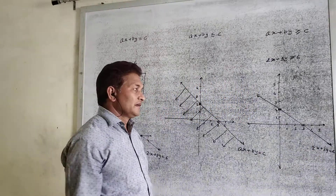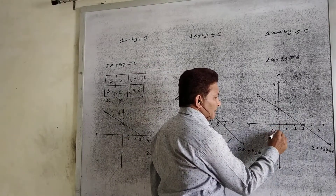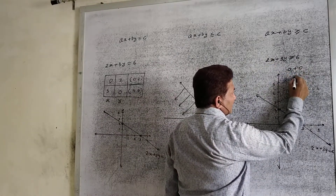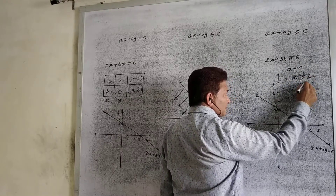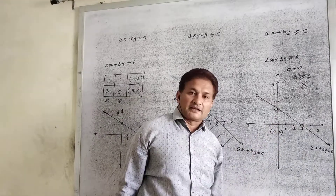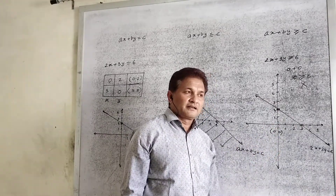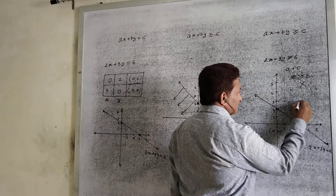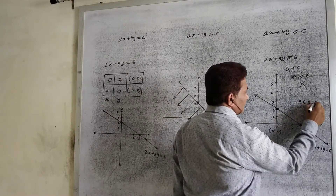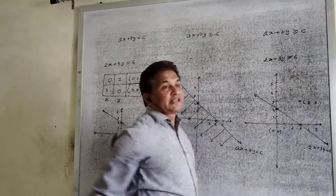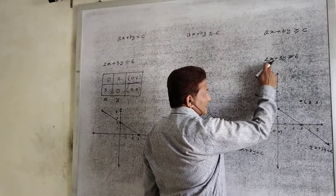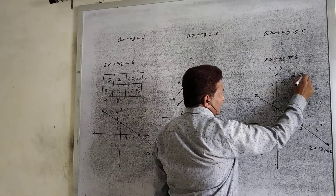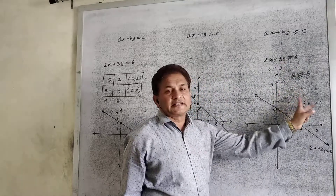In this equation, if we take the origin (0, 0) and put this value: x equal to 0, y equal to 0, we get 0. Zero is not greater than or equal to 6 — this point does not satisfy. Since this point below the line does not satisfy, take another point on the other side. Suppose the point (3, 3): x equals 3 gives 6, y equals 3 gives 9, total 15 which is greater than 6 — this point satisfies the given condition.